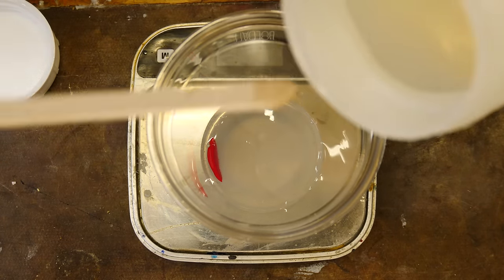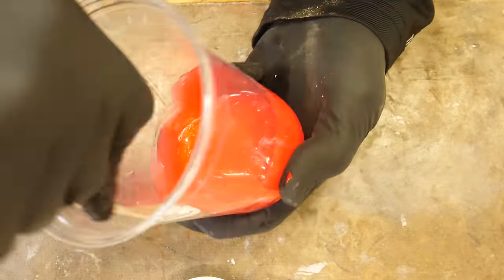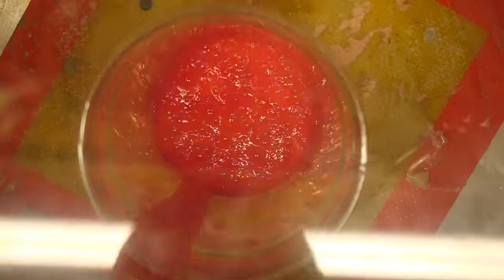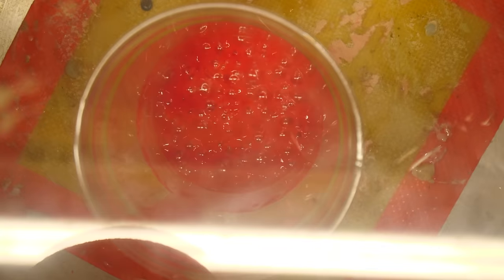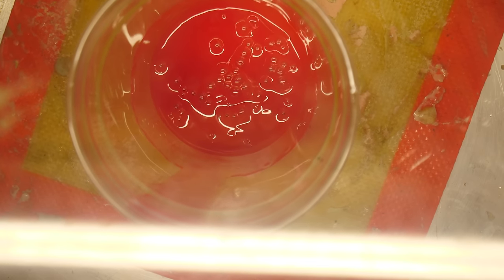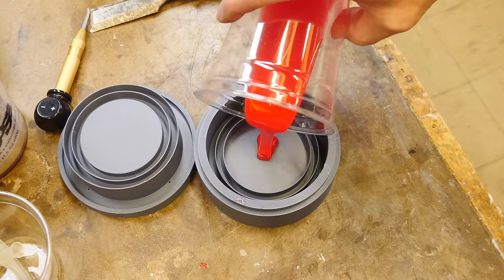We'll mix those together and I add a little color because I know that I'm going to be making a bunch of these and this helps me keep track of which one is which. We're going to degas it in the vacuum tank. This is going to remove the air bubbles out of the silicone mixture that were introduced from mixing the two components together.